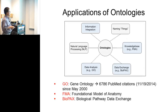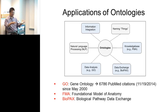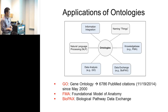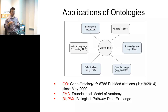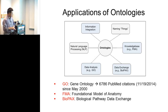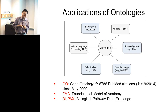This slide summarizes some applications of ontology: naming things — like what is human, thalamus, mice. Knowledge base — for example, the Foundational Model of Anatomy, which is an anatomy ontology about a normal human person. I can claim some credit for that because I helped develop it with Cornelius Ross at the University of Washington.